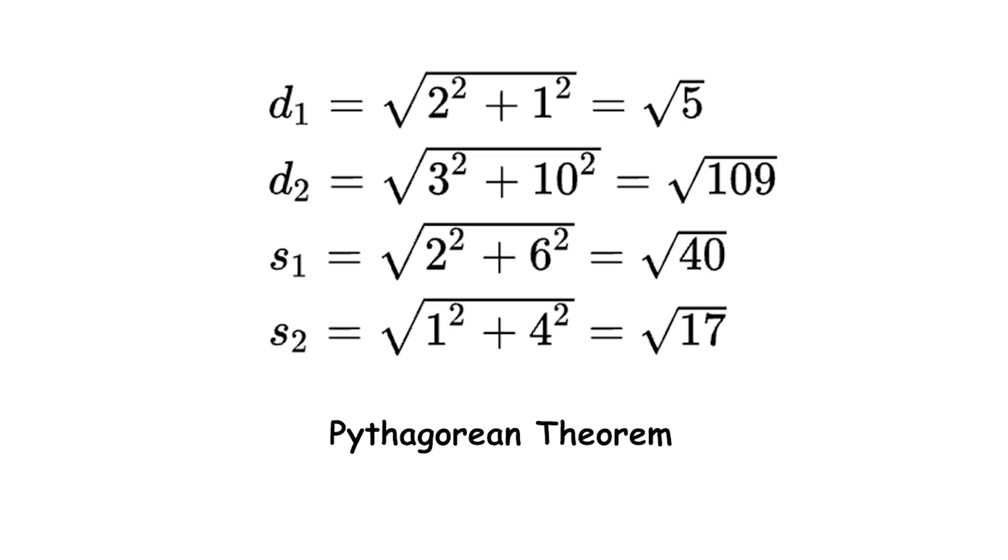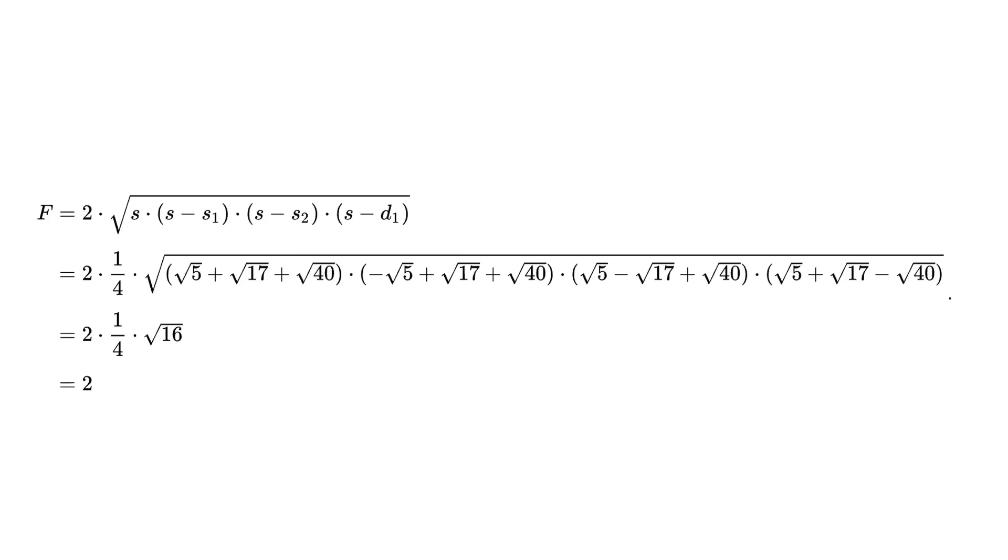And for Heron's formula, it is to calculate the area of the parallelogram. Heron's formula allows you to find the area of a triangle when you know the lengths of its sides. When you do the math, you find that the area of this overlapping parallelogram is exactly 2 square units. This explains the missing area.